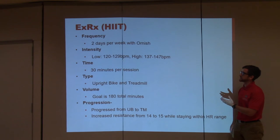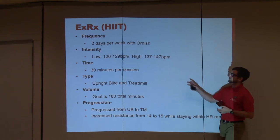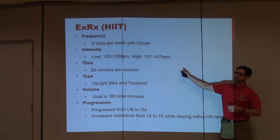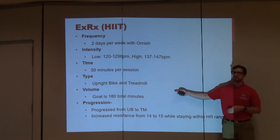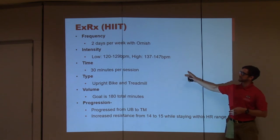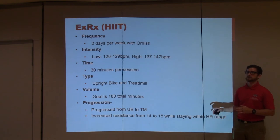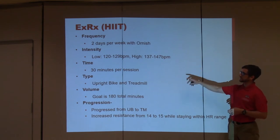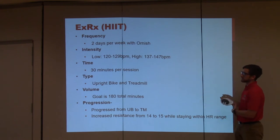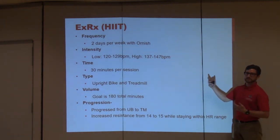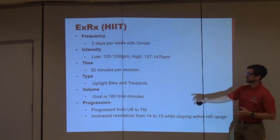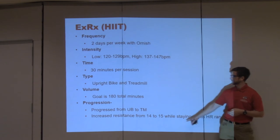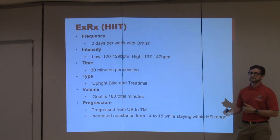Here's his exercise prescription. He had a frequency of 2 days per week with the Ornish program — a HIIT training protocol — with a low intensity of 120 to 129 beats per minute and a high intensity of 137 to 147 beats per minute. It was a 4 minutes on, 4 minutes off protocol. This is incredible for a patient with severe coronary artery disease who had a 5-way bypass and 11 years later comes back and gets a stent. He did 30 minutes per session, started on an upright bike, and then moved to the treadmill. The goal was 180 minutes per week; with us he was doing 60 minutes a week. He progressed from the upright bike to the treadmill and increased resistance from level 14 to 15 while staying within the heart rate range — increasing workload while maintaining the same heart rate is phenomenal.